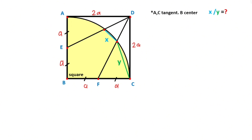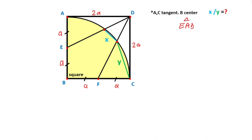If you notice, this triangle and this triangle have the same sides, which means these two triangles are congruent. So triangle EAD and triangle FCD are congruent. Therefore, if here is angle alpha, this angle must also be equal to angle alpha, so 90 minus 2 alpha is left here.